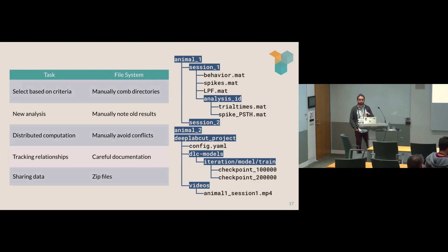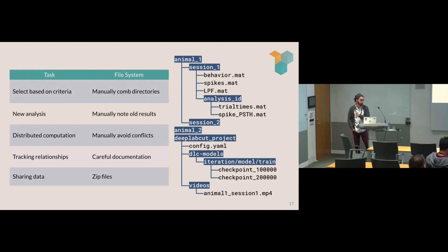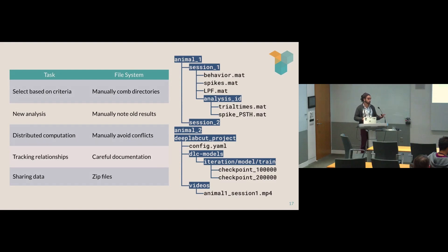Distributed computation in this process often takes the shape of sharing data and communicating with collaborators — agreeing who will analyze which subjects — which becomes a conversation separate from actually analyzing the data. Tracking relationships requires careful documentation in master spreadsheets dedicated to a specific project, which can be huge when aggregating datasets across multiple projects. Data sharing via zip files or archives is helpful, but it's still passing files from one place to the next rather than having a centralized access point.